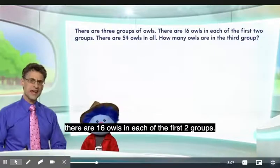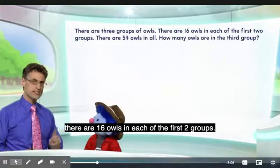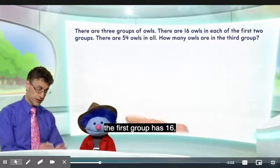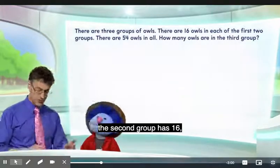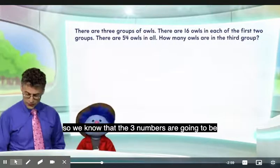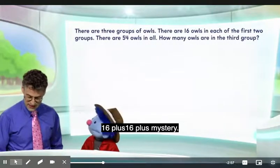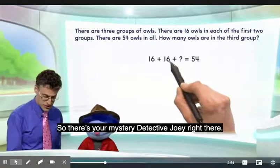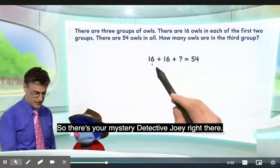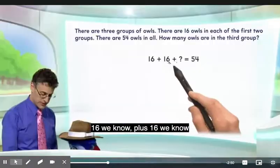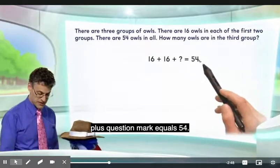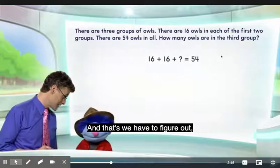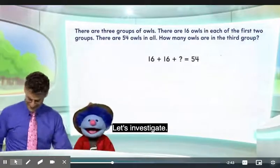Now we know that there are 16 owls in each of the first two groups. The first group has 16, the second group has 16, so we know that the three numbers are going to be 16 plus 16 plus mystery. So there's your mystery, Detective Joey: 16 we know, plus 16 we know, plus question mark, equals 54. That's what we have to figure out — what's the mystery.